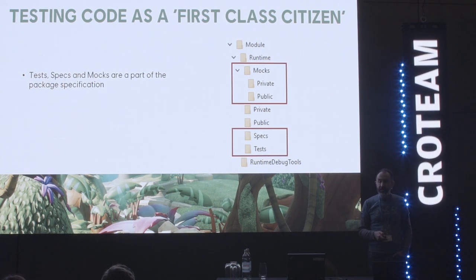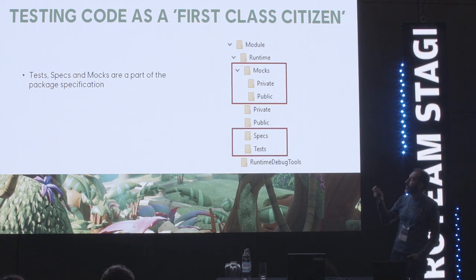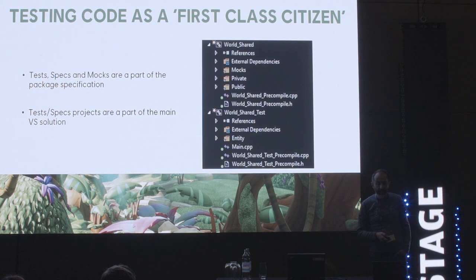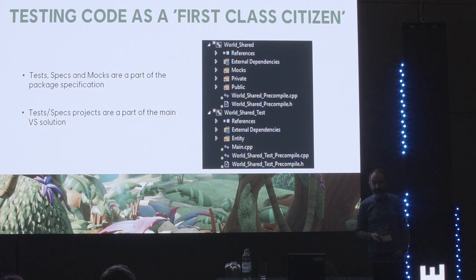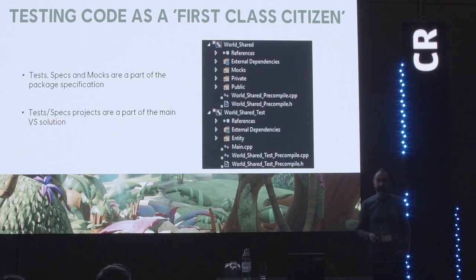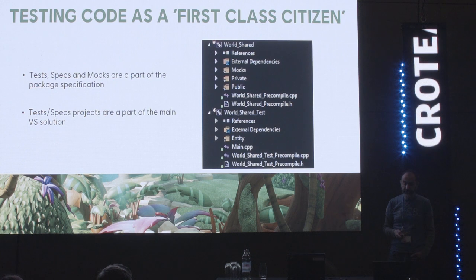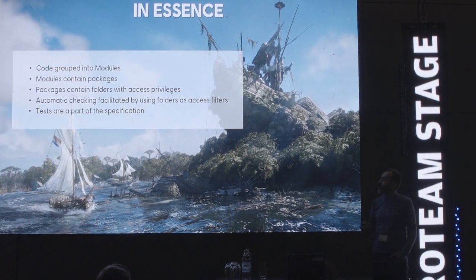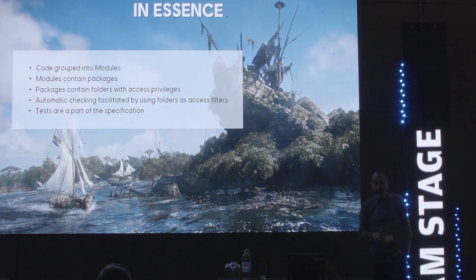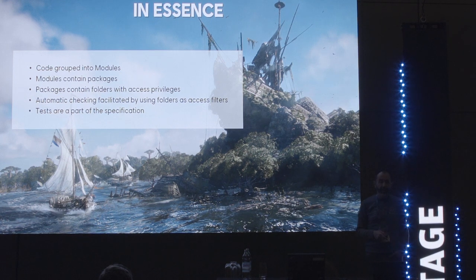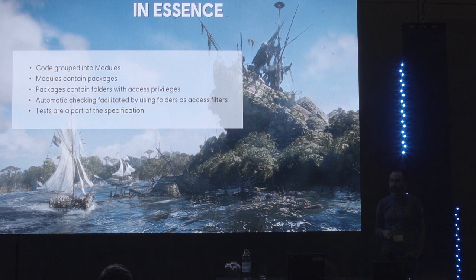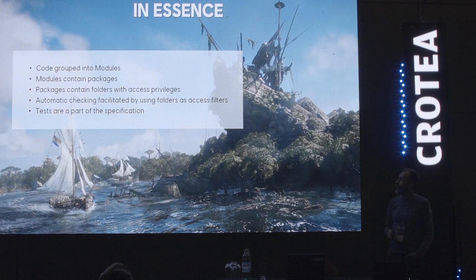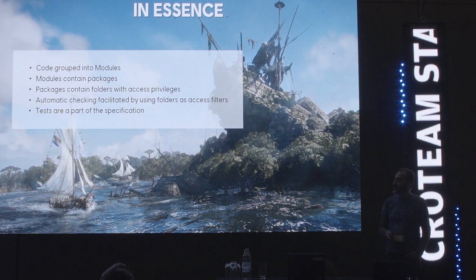We have already seen that the testing code is a part of the package specification — with the folders mocks, specs, and tests. In addition, test and spec projects are now part of the main Visual Studio solution. They are always compiled and are constantly run by build machines as part of the validation process and the standard build process. To summarize, the principal characteristics of our physical architecture are: code is grouped into modules; inside modules, packages are used to group code by compilation target — shared, runtime, tools, etc.; packages contain folders with access privileges — public, private, tests, etc.; automatic checking is made trivial by using folders as access filters; and tests are part of the specification and are part of the main build.